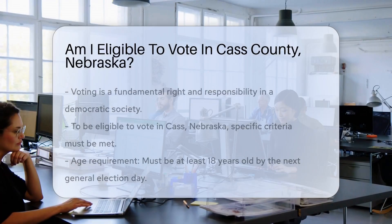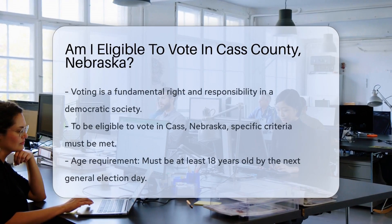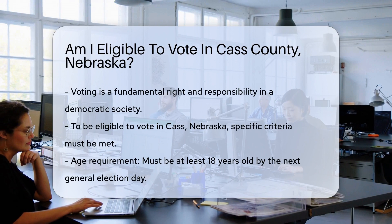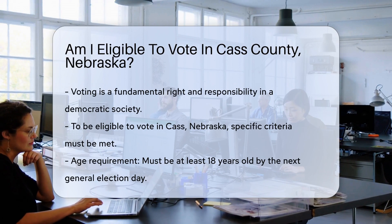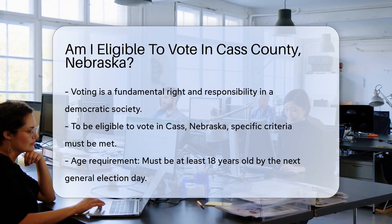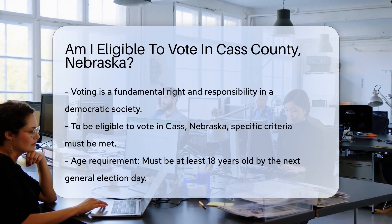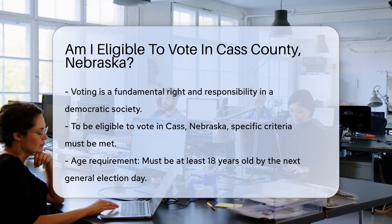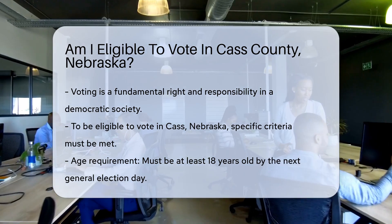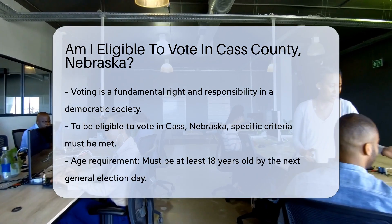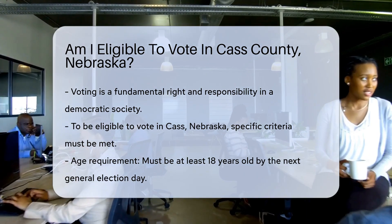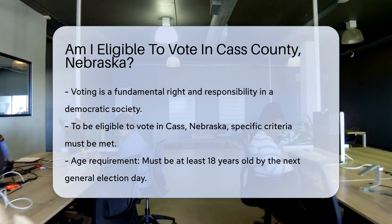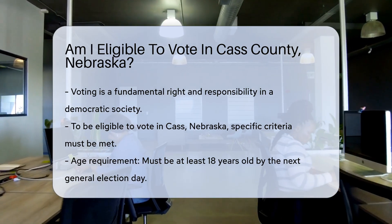Voting is a fundamental right and responsibility in a democratic society. In Cass, Nebraska, determining eligibility to vote involves understanding specific criteria set by law. These criteria ensure that the electoral process is fair, inclusive, and accessible to all eligible citizens.